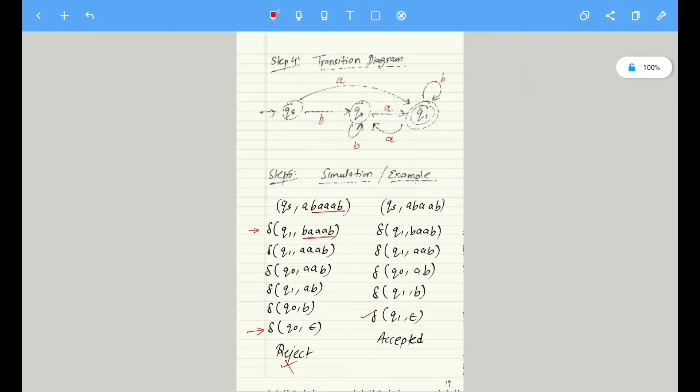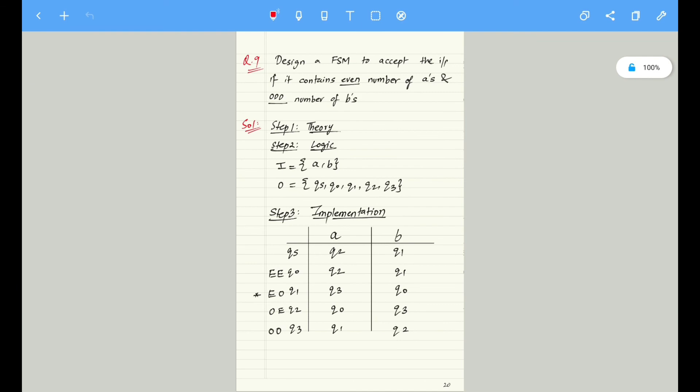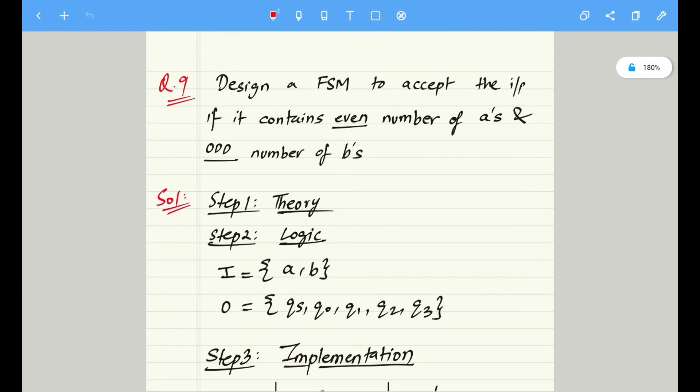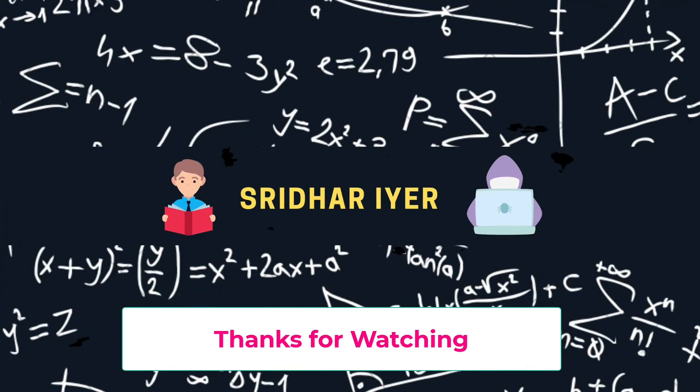So I hope you got the understanding of this problem. In the next problem, we are going to see a combination of two inputs—that is, even number of a's and odd number of b's. So stay tuned and we will see you next time.